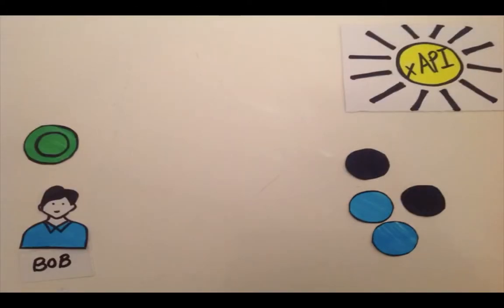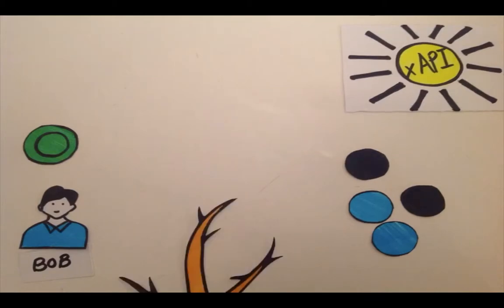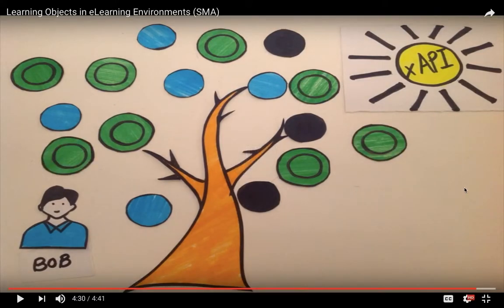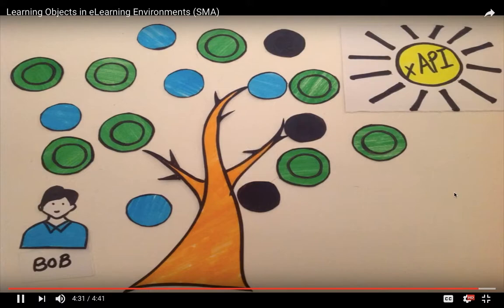Critical data from on-the-job training, mentoring, and offline social learning experiences can all be tracked and combined with data from formal learning experiences, giving a more holistic view. At the beginning and the ending it looks like the same picture — the colorful tree — just like an ABA structure in music. The entire video explains what information is required to build this tree, and we can study this from the video.